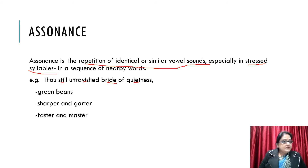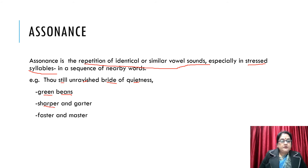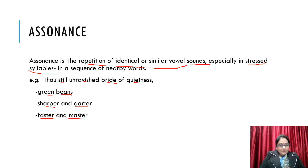More examples: 'Green beans' — here the vowel E has been repeated. 'Sharper and hotter' — again E has been repeated. 'Faster and master' — again the vowel sound has been repeated. So we find that in assonance, the vowel sound is repeated, especially in stressed syllables.